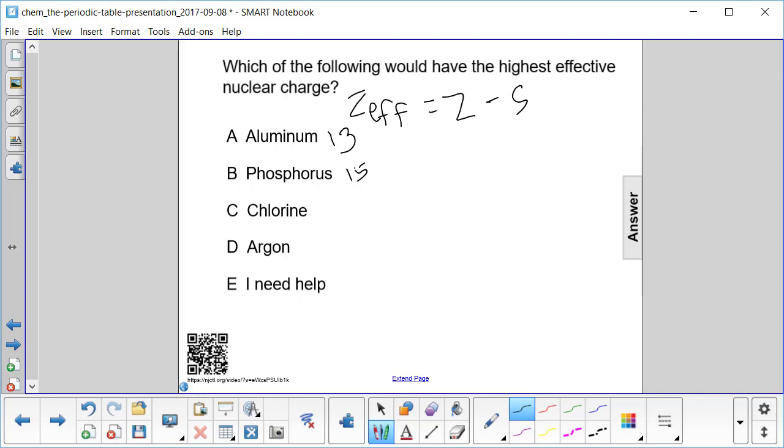Chlorine, which has 17, and argon, which has 18.